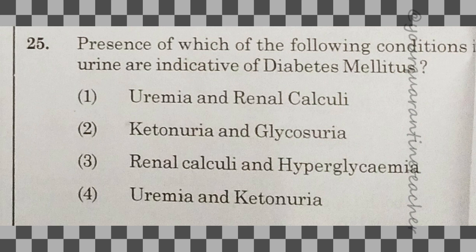25th question: presence of which of the following conditions in urine is indicative of diabetes mellitus? The answer is option 2 — ketonuria and glycosuria.